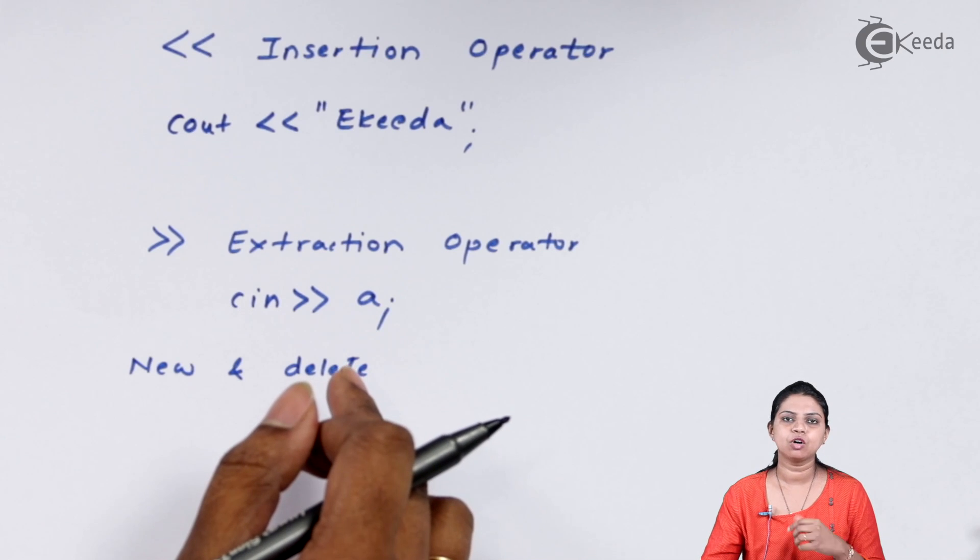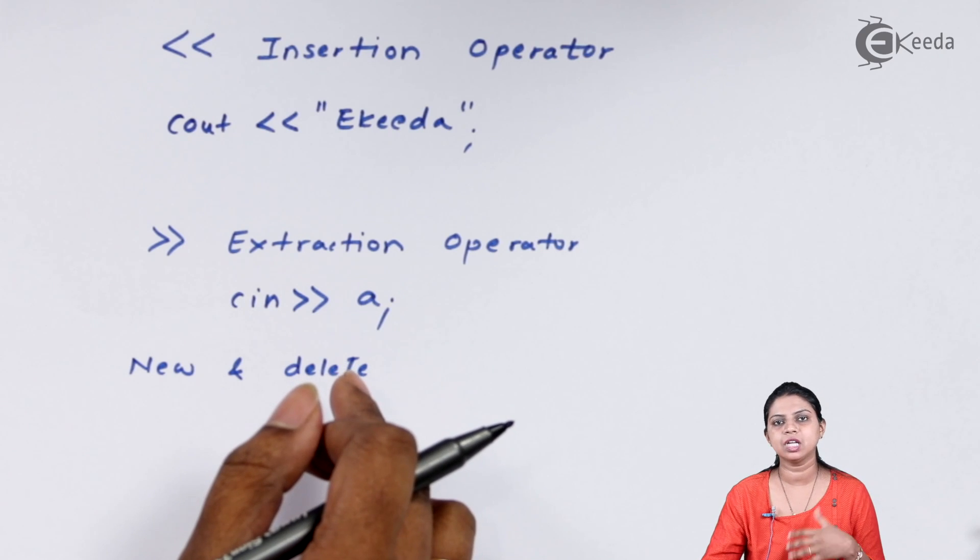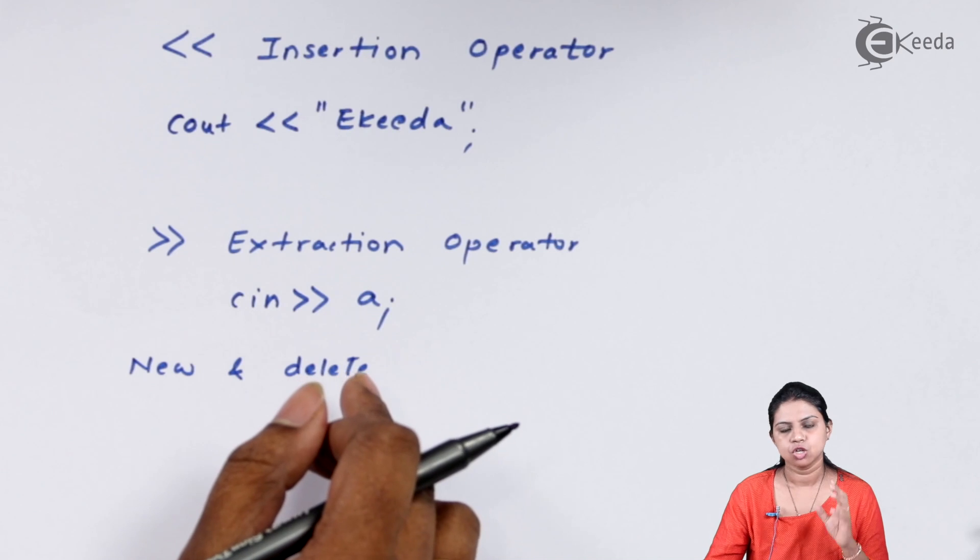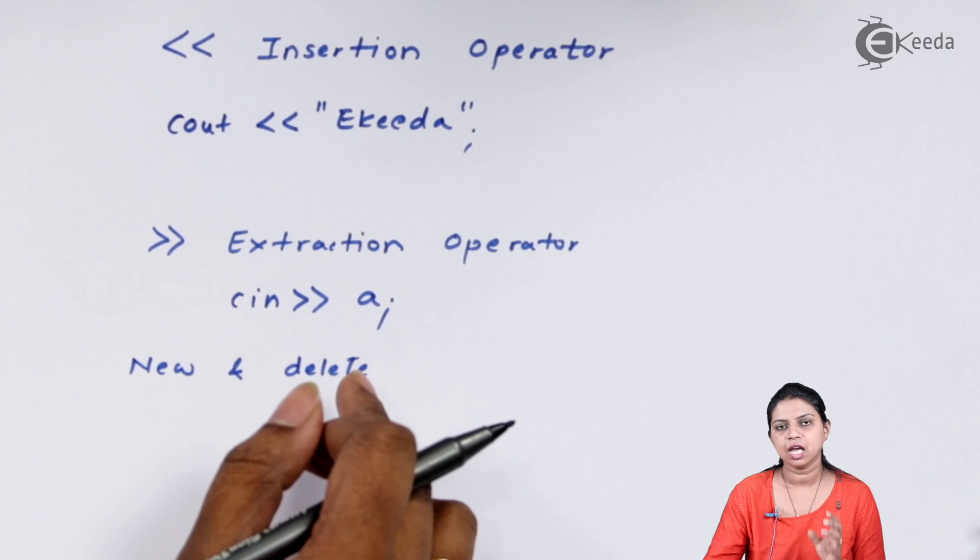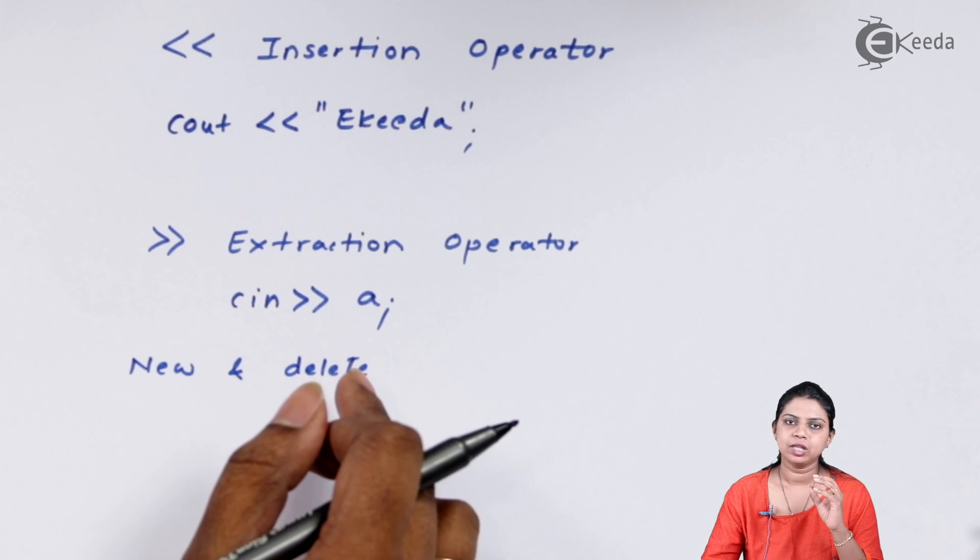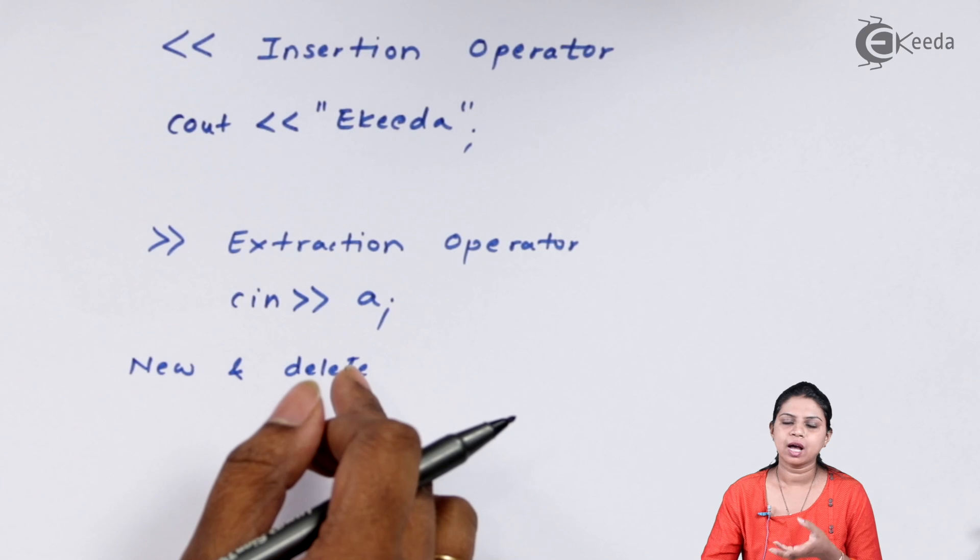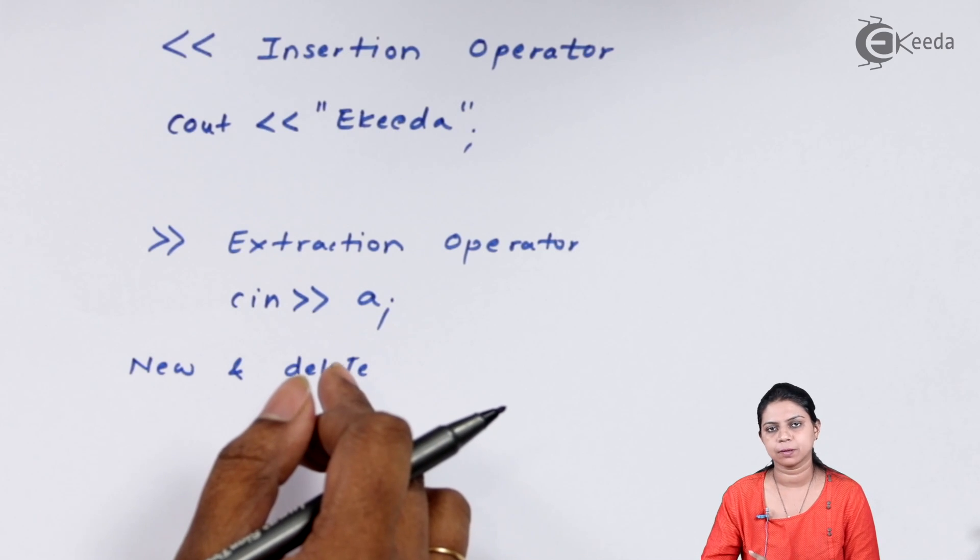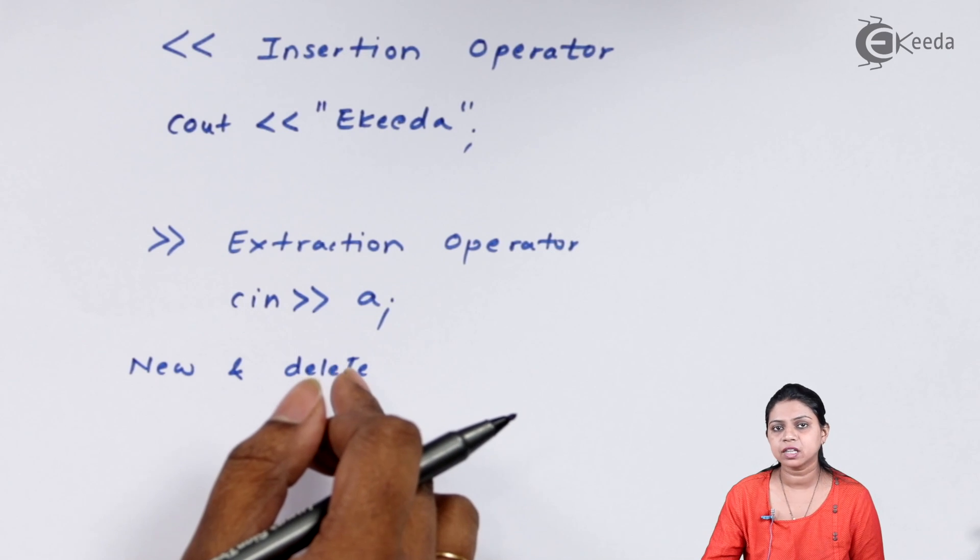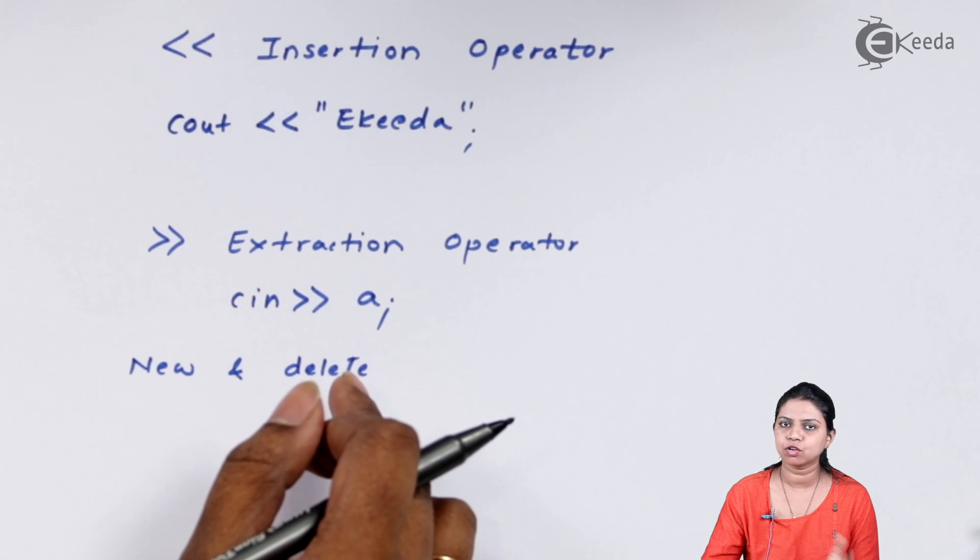Suppose I am entering the value of A, like if I am giving input A to the computer. In that case, I will write cin extraction A. The value of A is entered by the user. From where will the user enter the value? The user will enter the value from the keyboard.